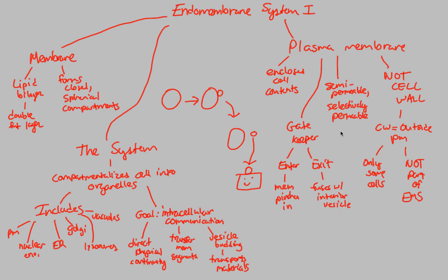So this covers the introduction to our endomembrane system. We now understand what a membrane is composed of. It's simply a lipid bilayer to separate the specific compartments within it. That's one of the goals of this system: to compartmentalize the cell into these organelles. And this overall goal is done so that we can communicate within the cell. One of the main components of the endomembrane system is the plasma membrane. The main thing I would definitely go away with is that it's semi-permeable and selectively permeable. And it is certainly not a cell wall because a cell wall is located outside the plasma membrane and is not a part of the EMS.